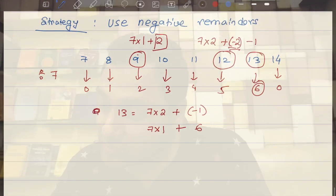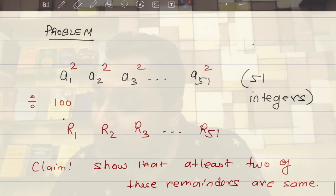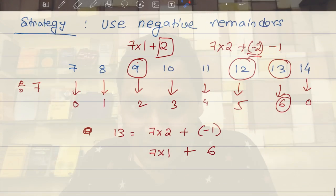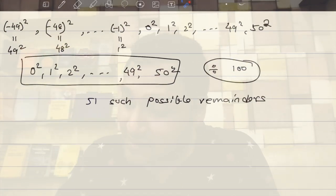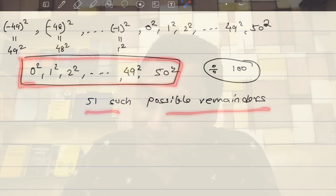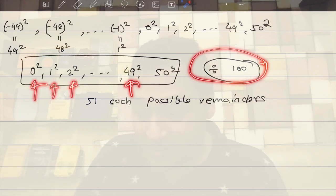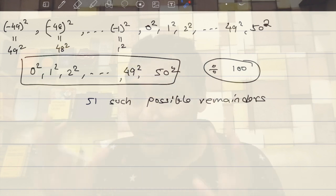Okay, so now let's get back to the question. The question says that we have 51 square numbers. We want to divide them by 100. These are the remainders. We want to show that at least two of these remainders are same. Now, in our analysis, we got 51 possible remainders. How can we say that two of them, at least two of them, would be the same? Remember, we are dividing by 100. These are the possible remainders. And there are 51 numbers in this list. Something very simple is happening. For that reason, we can say at least two numbers in this list will be the same when divided by 100.